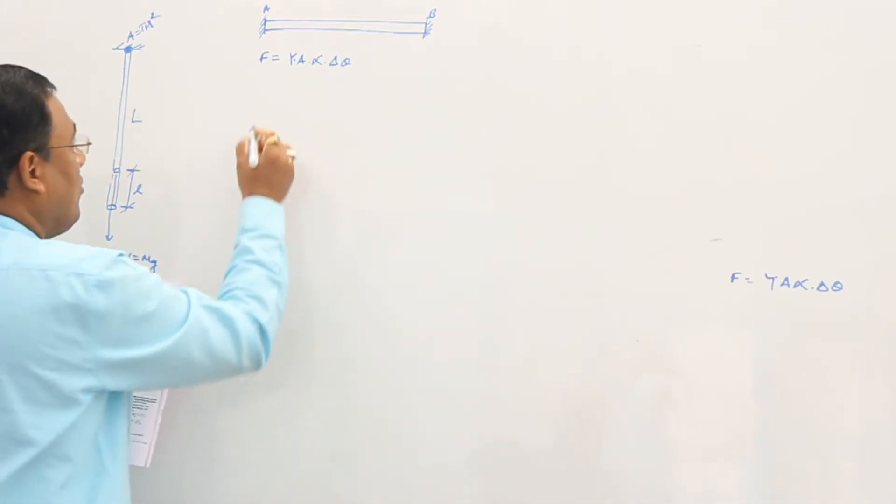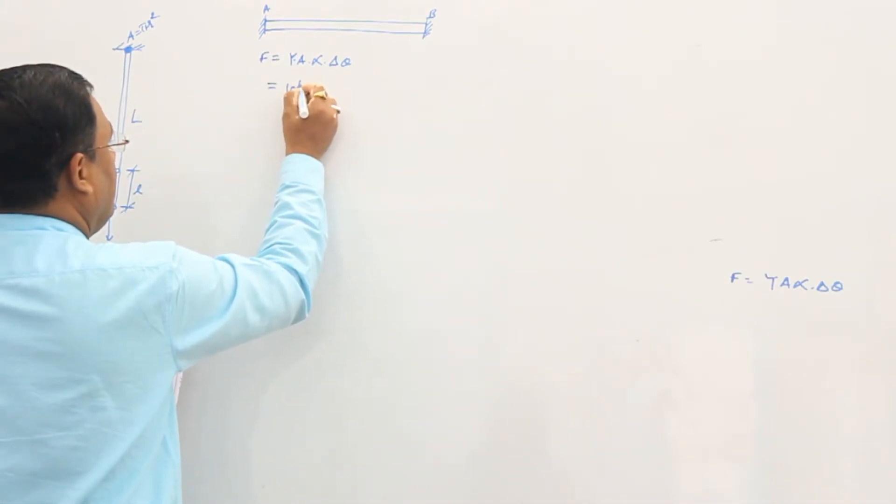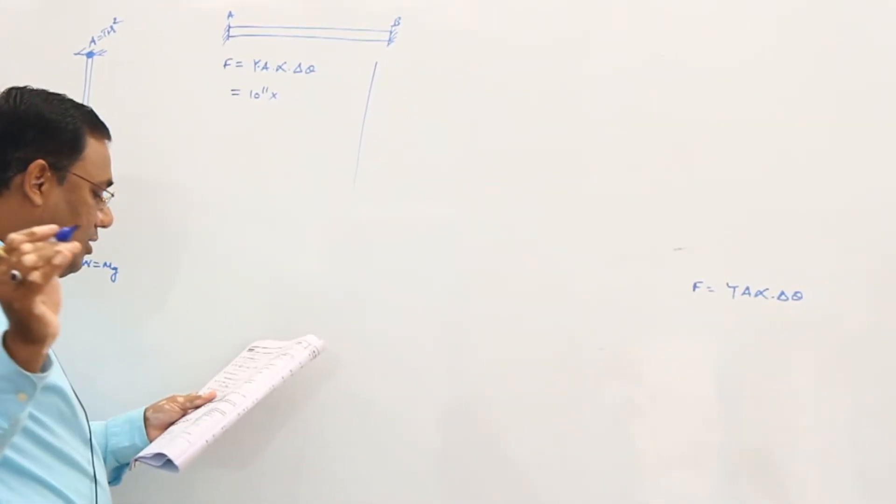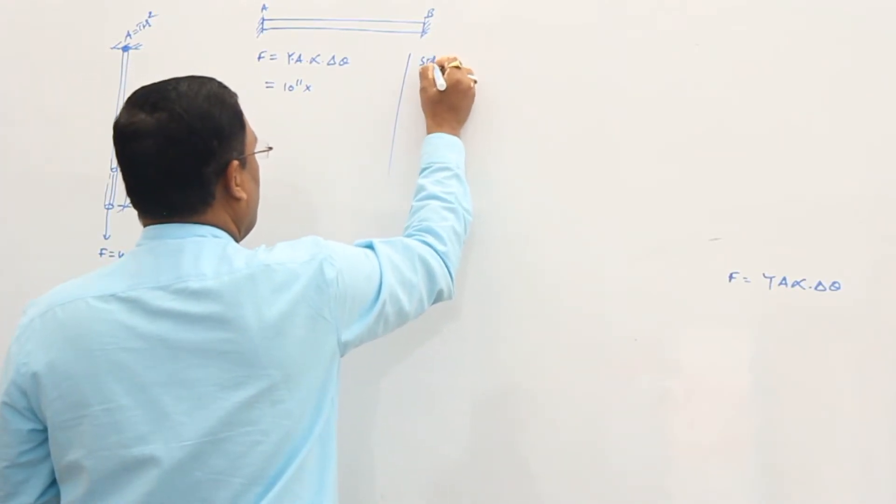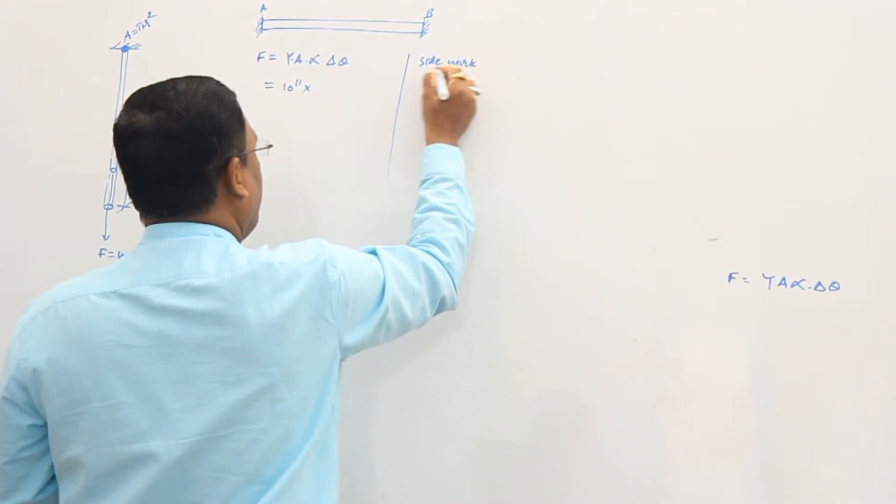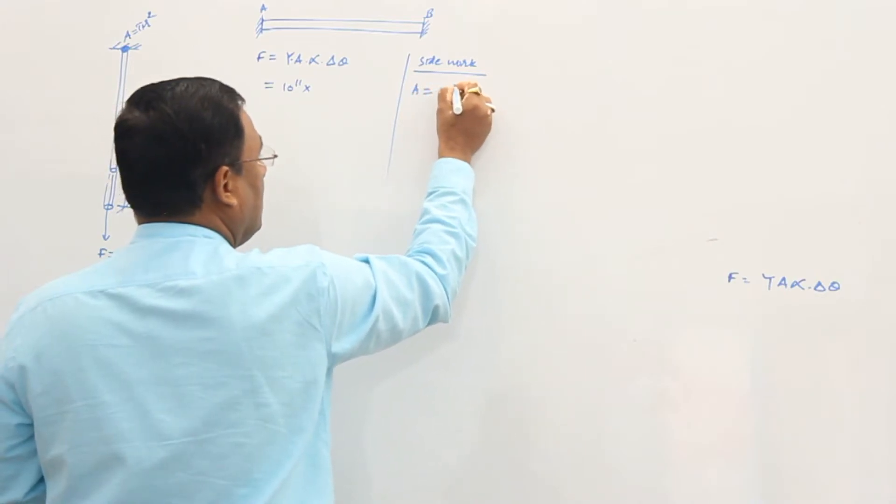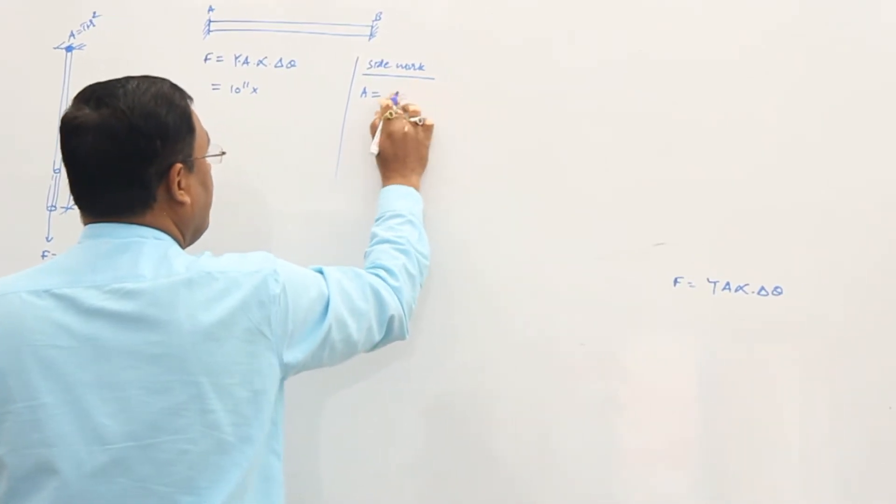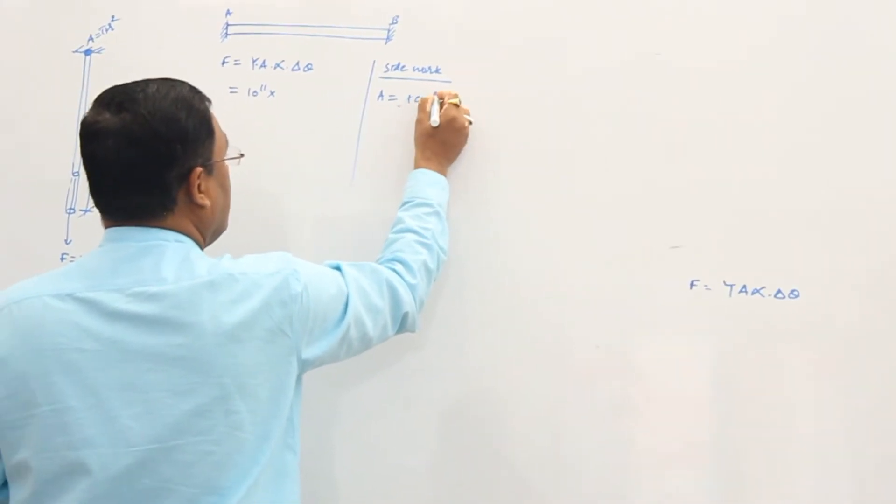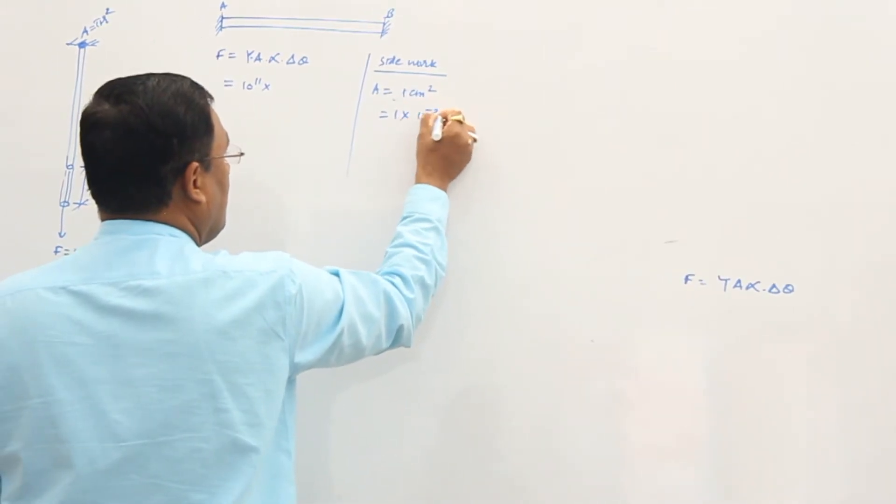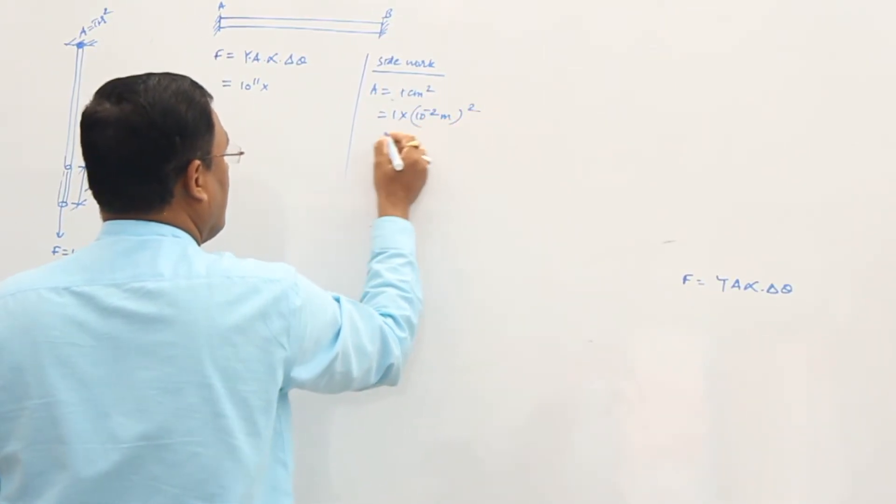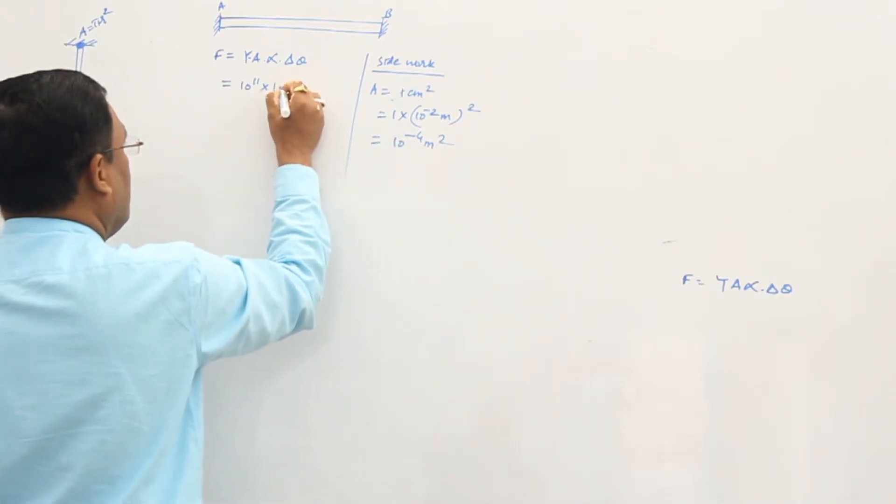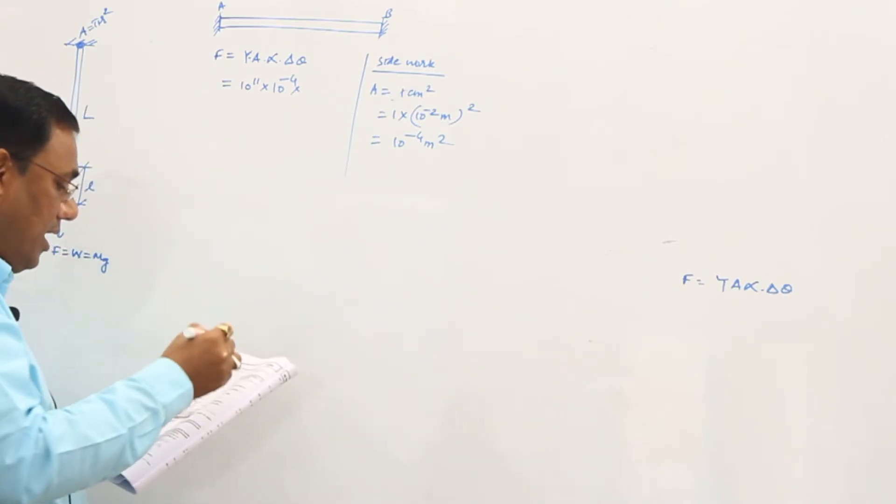Now what values are given? Tell me, what is the value of Y? It's given as 10 to the power 11. Area, how much is given? But the area that's given to us is not in SI unit, so we'll have to convert it to SI. So area is how much? Tell me. Yes, 1 cm². Okay, 1 cm². So 1 cm is 10 to the power minus 2 meter, squared. No need to write 1, so this is 10 to the power minus 4 meter square.